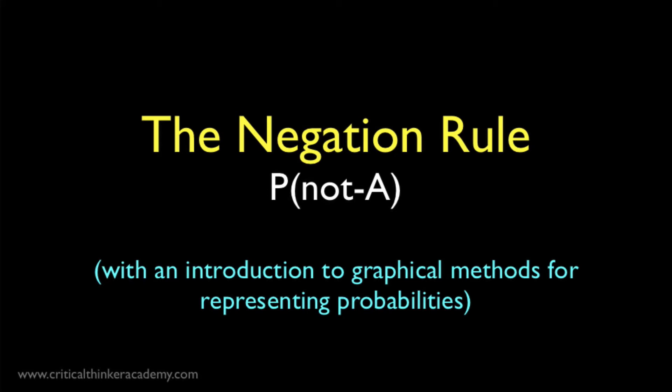The first of the basic rules we're going to cover is the negation rule. We're given an event A, and we know the probability of A occurring. Call this P of A. What is the probability that A will not occur? This is P of not A.